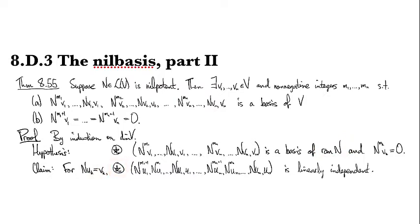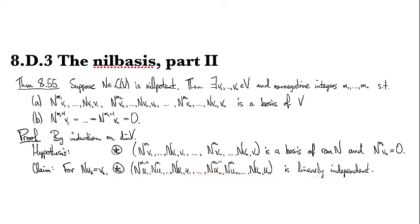The name of the game at this point is to prove that the list star-u is linearly independent. In the last video I mistakenly called it a basis already — sorry about that.